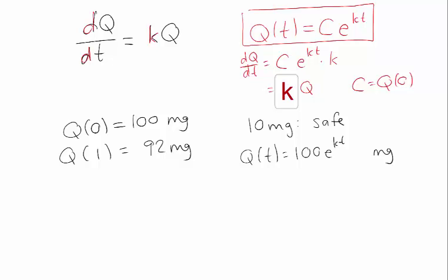But I know something else too. Because I took a measurement at day 1, I know that Q(1), which is 100 e to the k times 1, I know that's 92. So that means that e to the k is 92 divided by 100, or 0.92.